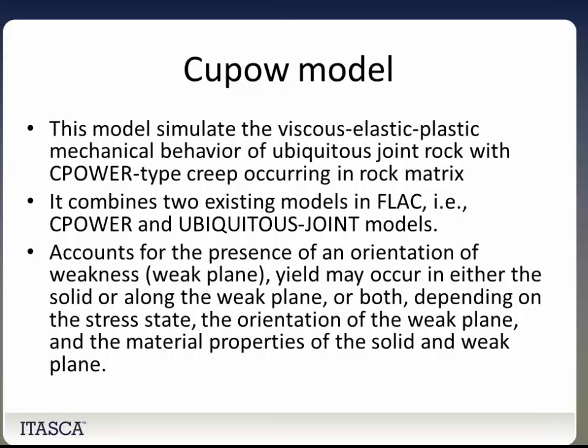Our last model is the CUPOW model. This model simulates the viscous, elastic, and plastic mechanical behavior of ubiquitous joint rock with C-Power type creep occurring in the rock matrix. It combines two existing FLAC models: the C-Power and the ubiquitous joint models. It accounts for the presence of an orientation of weakness, and yield may occur in either the solid, along a weak plane, or both, depending on the stress state, the orientation of the weak plane, and the material properties.